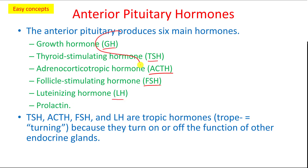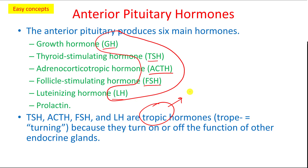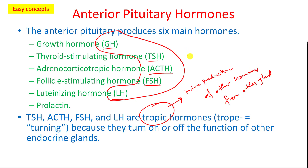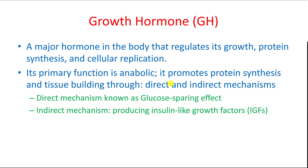Those hormones — GH, TSH, ACTH, FSH, and LH — are called the tropic hormones. They are called tropic hormones because they induce the production of other hormones from other glands. That's why the pituitary gland is the master gland of the body, because it can affect some of the other big important glands in our body.